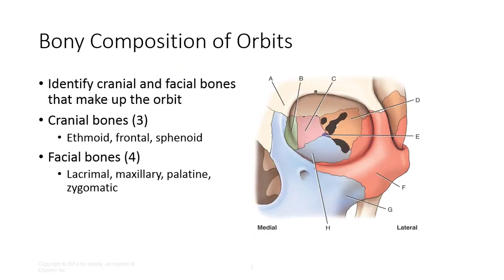Portions of multiple cranial and facial bones compose the orbital socket. The technologist should be able to identify the three cranial and four facial bones that make up the orbit. The cranial bones include the ethmoid, frontal, and sphenoid bones, while the facial bones include the lacrimal, maxillary, palatine, and zygomatic bones.